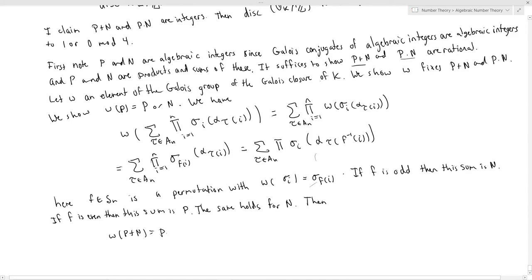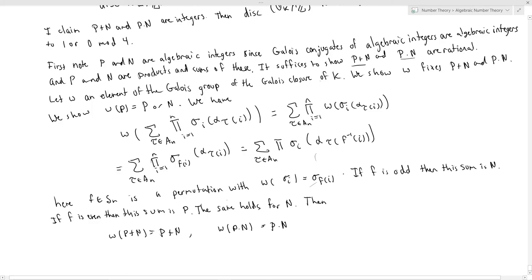You can do a similar computation and check the same holds for N. So N is either fixed or permuted to P by omega. Basically the result follows: omega of P plus N equals P plus N, and omega of P times N equals P times N. It's not possible that omega fixes P and also permutes N to P because omega has to be a bijection. Thus P plus N and P times N are rational. We already discussed above that they also were integers and why this finished the proof.